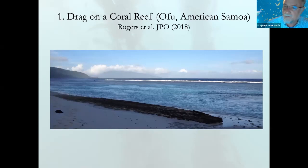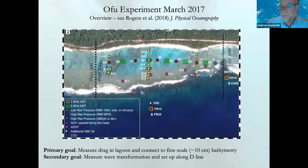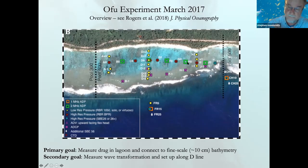The first topic is drag on a coral reef — work that Justin Rogers and I published in the Journal of Physical Oceanography in 2018. Here's the lagoon on Ofu. In 2017, we instrumented one of the pools of this lagoon quite extensively. Each green square is a 2 MHz acoustic Doppler profiler, well suited for measuring flows in shallow water. Yellow circles are pressure sensors and red circles are the high-resolution pressure sensors. The primary goal was to take the drag in the lagoon and connect what we measure to the fine-scale bathymetry — essentially, what's the sand grain roughness equivalent for this kind of coral?